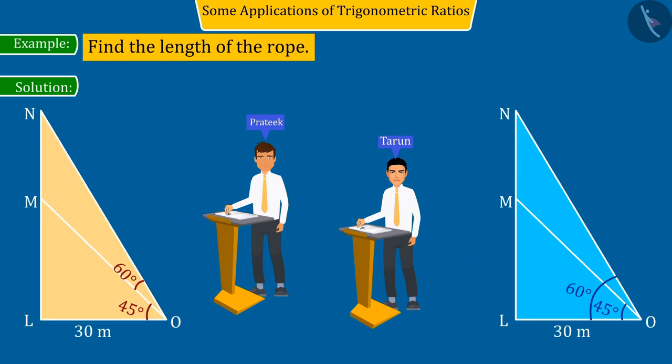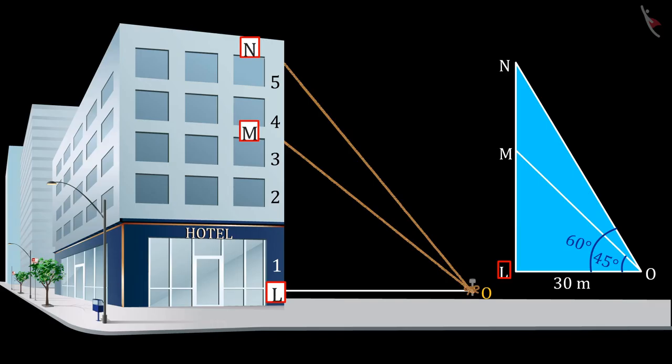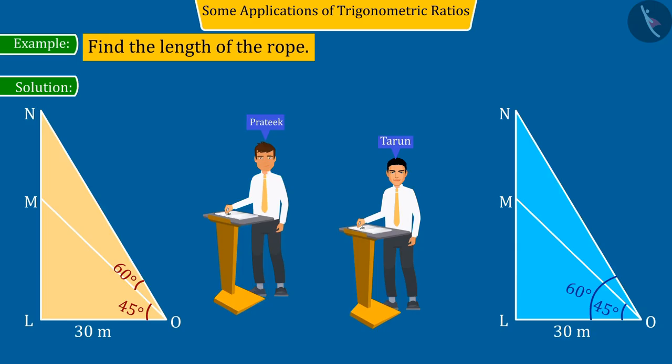In these figures created by both, point L represents the base of the building and points M and N represent the top of the third and fifth floors of the building respectively. So, can you tell which of the following figures is correct?